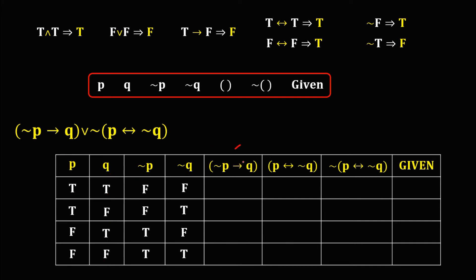For this column, the connector is implication. Only true implies false gives a false truth value. From NOT P and Q: false arrow to true is true; false arrow to false is true; true arrow to true is true; and true arrow to false — that's TF — so this one is false.